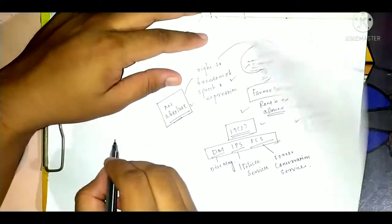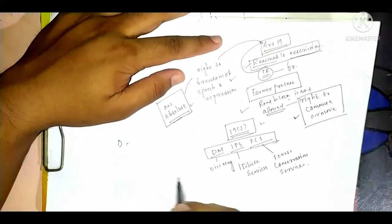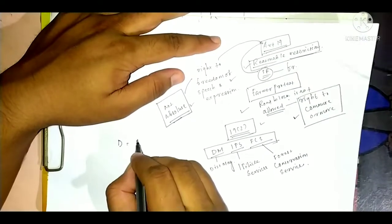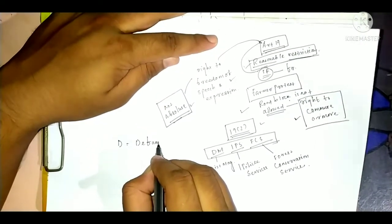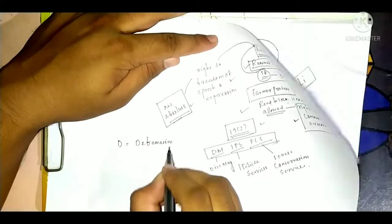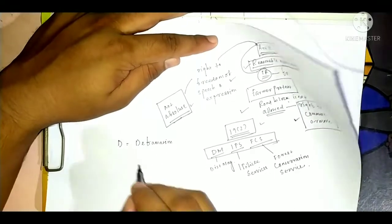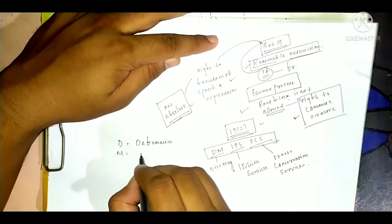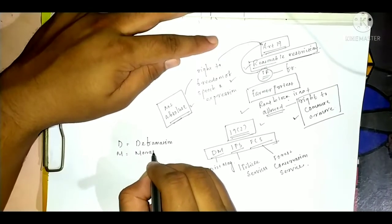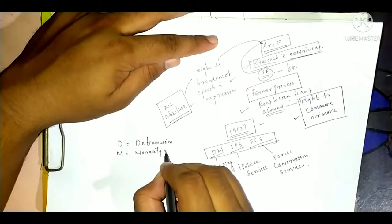Let's start from D, it is defamation. From M, it is morality or decency.